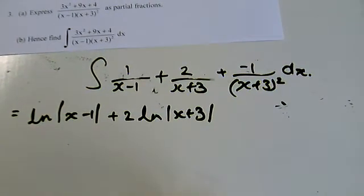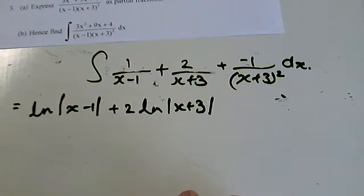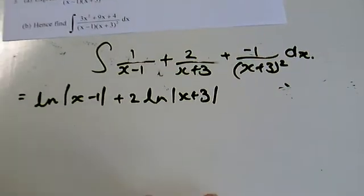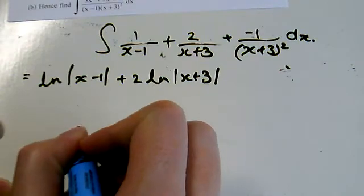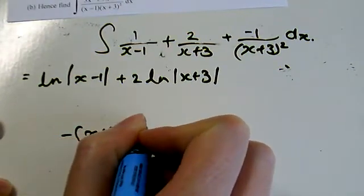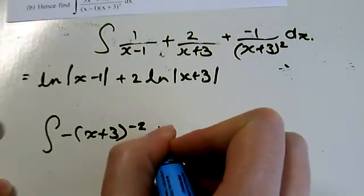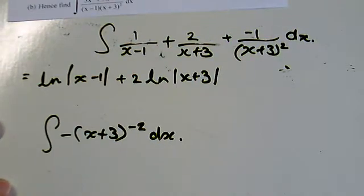The last one, some of you might try and use a ln for this. It's not actually going to turn out to be a ln. There's a couple of different ways. If I just do a little bit of working out down here. I'm going to rewrite it as minus x plus 3 to the minus 2, and I'm trying to integrate that. You could use substitution.